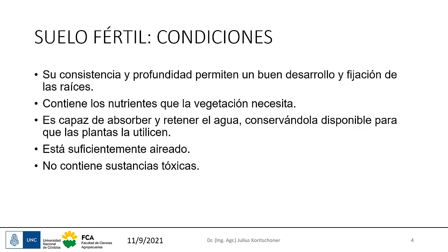En esta diapositiva vemos cuáles son las condiciones para un suelo fértil. Básicamente, si tengo que tener una capacidad de soporte a la producción vegetal, lo que tengo que permitir es que se dé un buen desarrollo y una fijación de raíces como medio físico. A eso se le suma una buena aireación y una buena acumulación de agua, que mezcla una parte física con la capacidad de absorción relacionada con la físico-química del suelo y las arcillas. Por otro lado, no debe tener sustancias tóxicas y debe tener una adecuada capacidad de provisión de nutrientes. Esto estaría más relacionado con la fertilidad química.